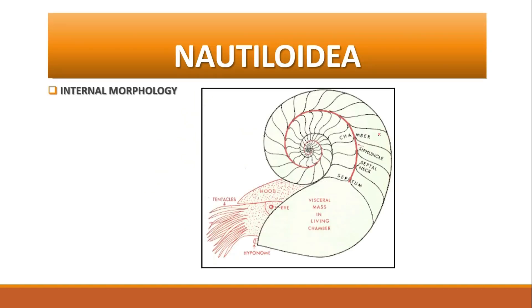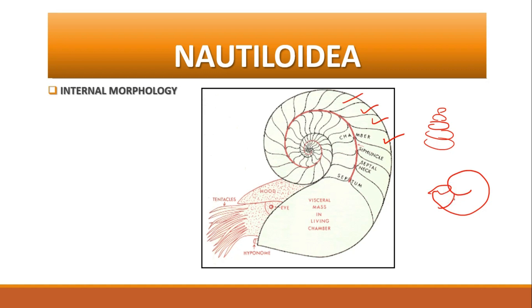Now let's look at some of the most important characteristics of the internal morphology of nautiloidic shells. Just like in gastropods where the whole shell was divided into different whorls, here also a nautiloidic shell is divided into different chambers. The interior of the shell is divided into a number of chambers by means of thin transverse partitions termed septa.